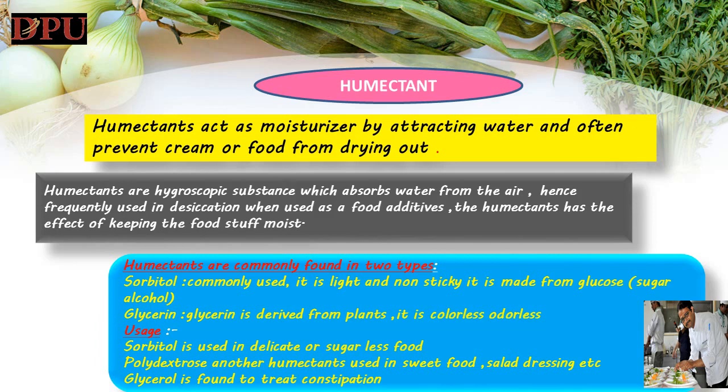Examples of other commonly used humectants include glycerin, honey, sugar alcohols, glucose syrup, egg yolk, egg white, molasses and alpha-hydroxy acids such as lactic acid. Usage: sorbitol is used in dietetic or sugar-free food. Polydextrose is another humectant used in sweet food and salad dressings etc. Glycerol is found to treat constipation.